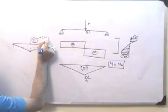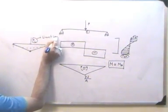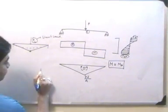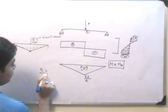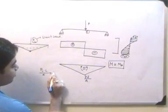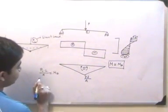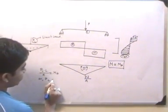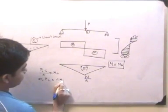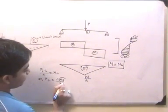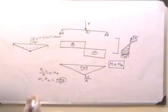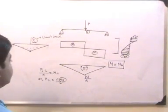PL is the limit load and this PL into L by 4 will essentially give me the plastic moment MP. So, PL is essentially equal to 4 MP by L and MP, we can find it out from the previous lectures.